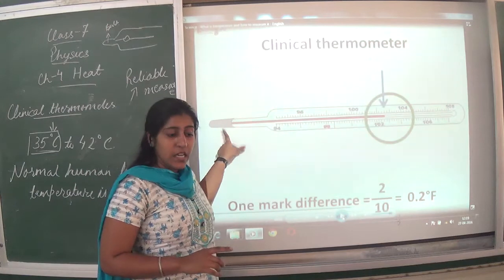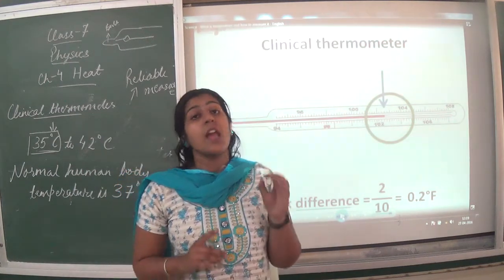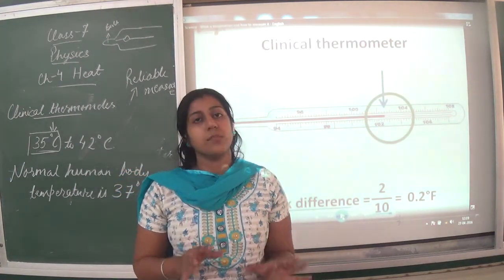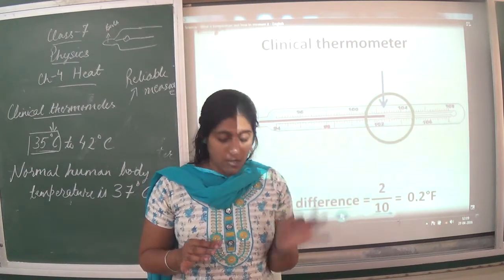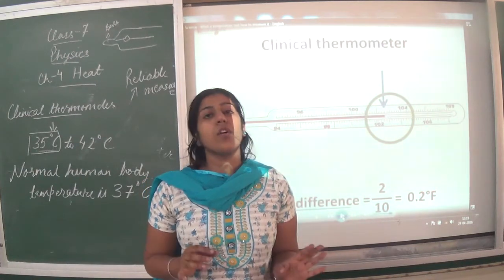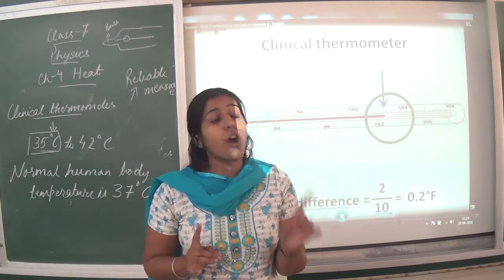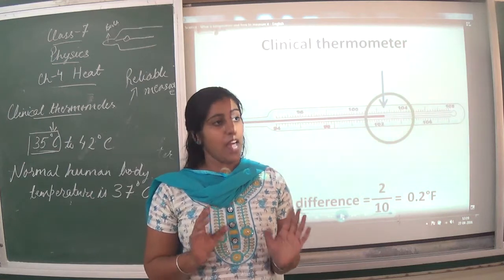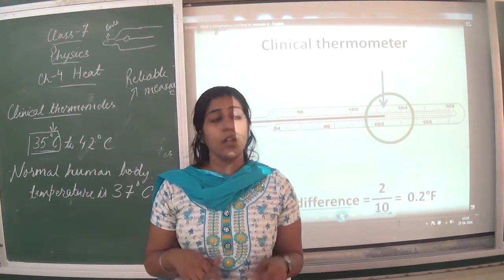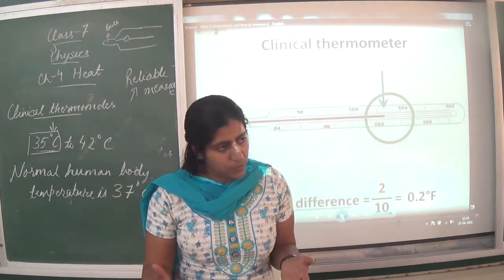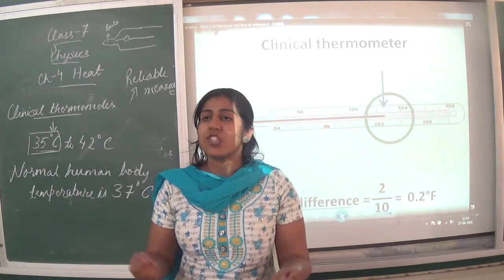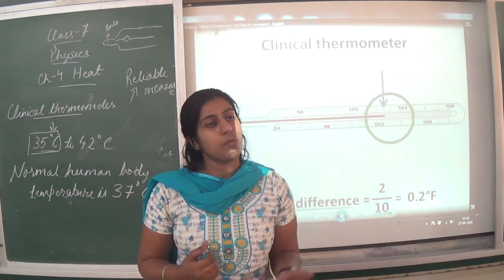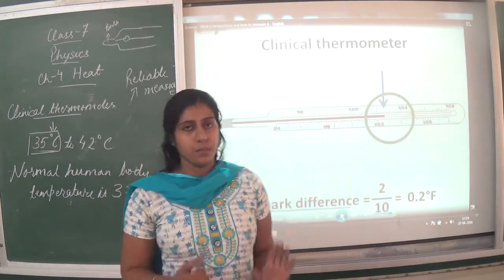Mercury is a toxic substance. When the thermometer breaks, mercury falls on the floor. We should not touch the mercury with our hands as it is very toxic. Use a cloth or sharp object or get help to dispose of mercury properly.